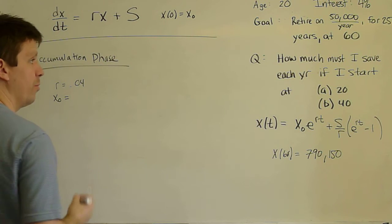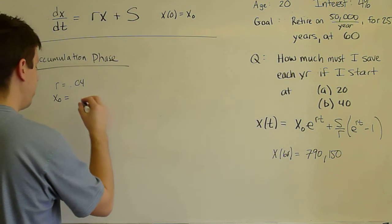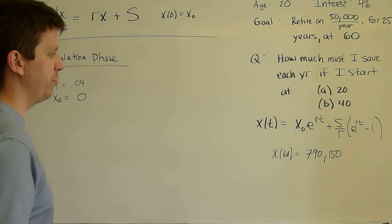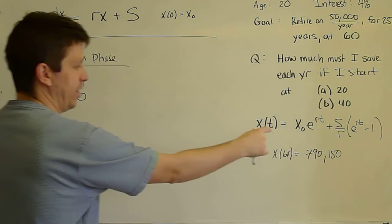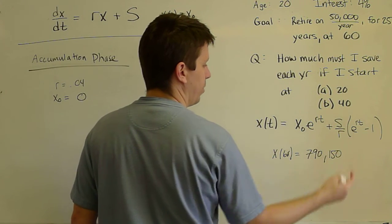R = 0.04. X₀ now we can assume to be 0. You don't start saving until 20 or 40. So X₀ = 0. That will simplify the problem. S is now our unknown.